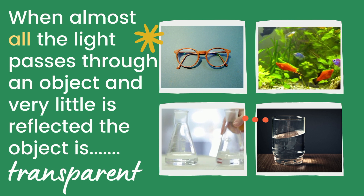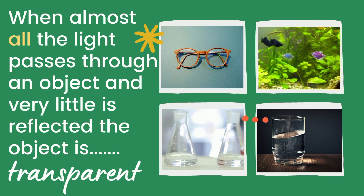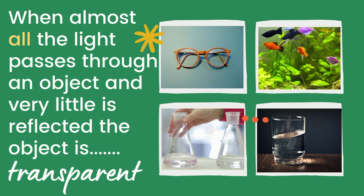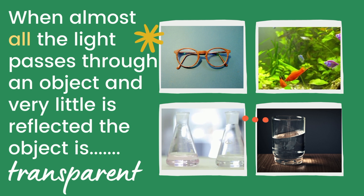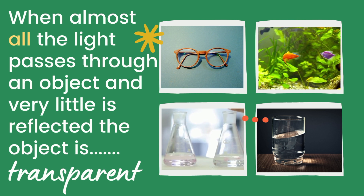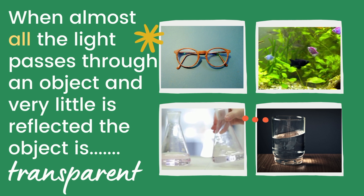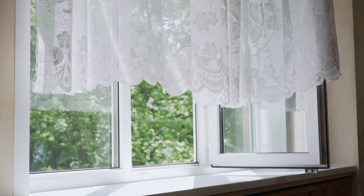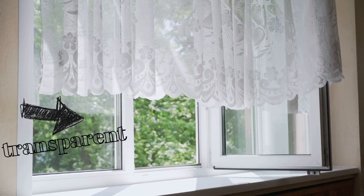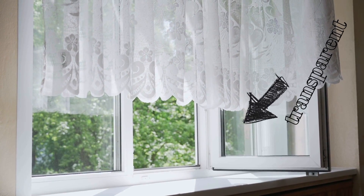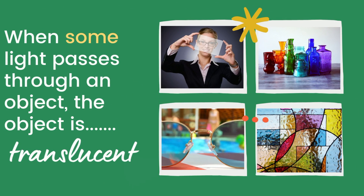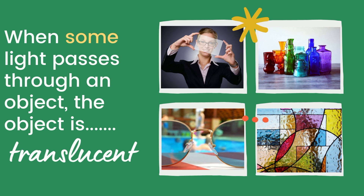When almost all the light passes through an object and very little is reflected off of it, it's called transparent. Things that are transparent appear almost see-through, like these glasses, this aquarium, these science beakers, or this glass of water — they're all transparent. The light passes right through them and you can see right through them too. A window is transparent — the light goes right through it.